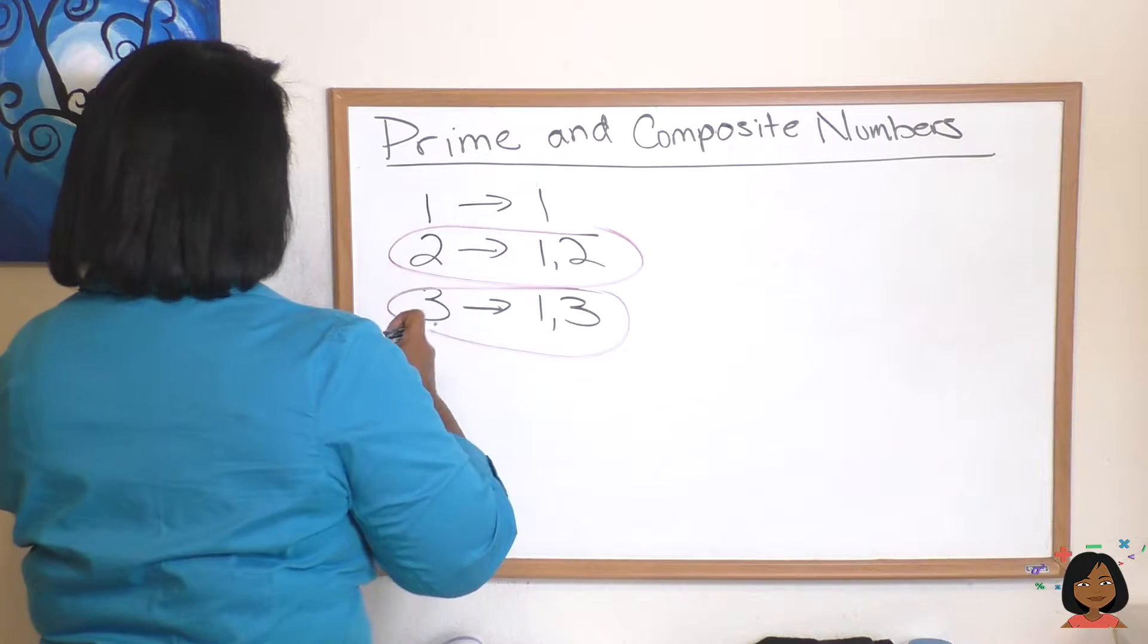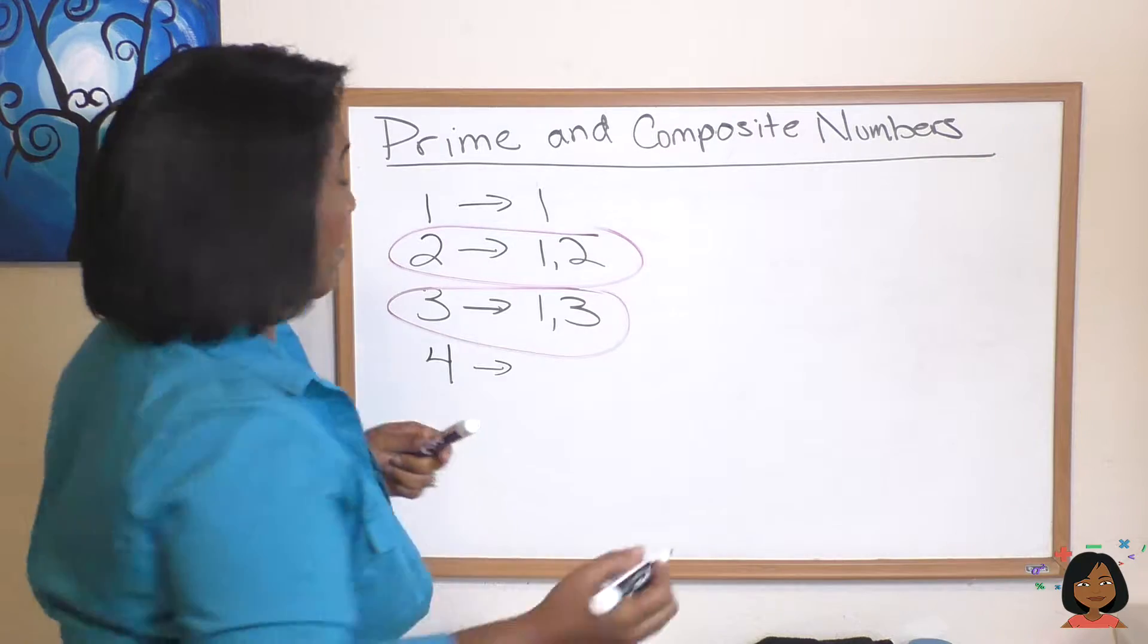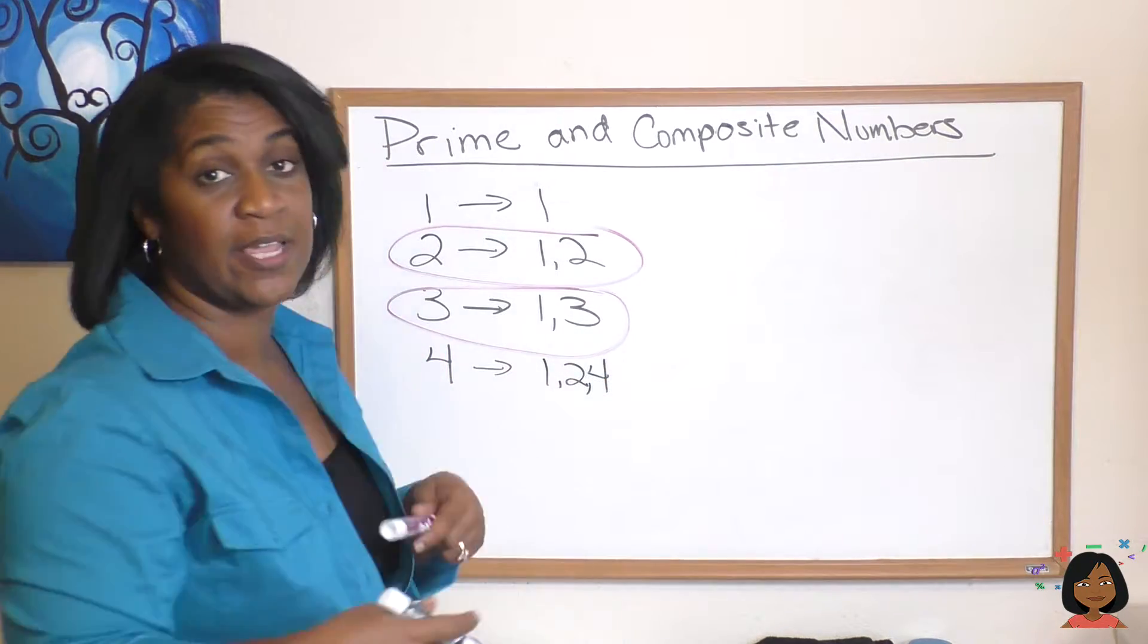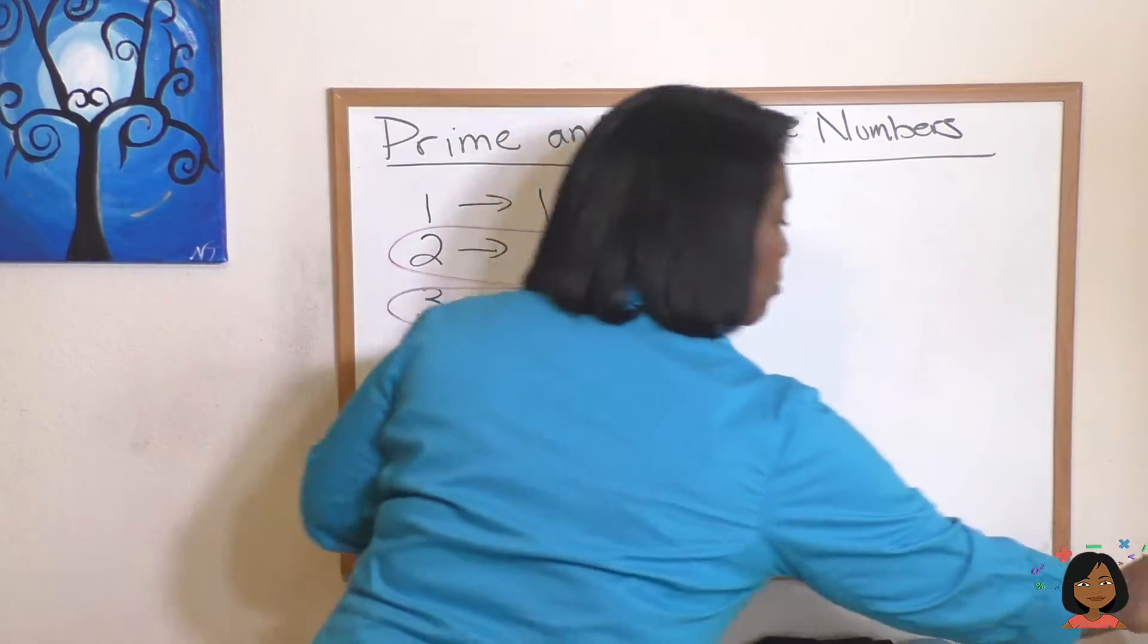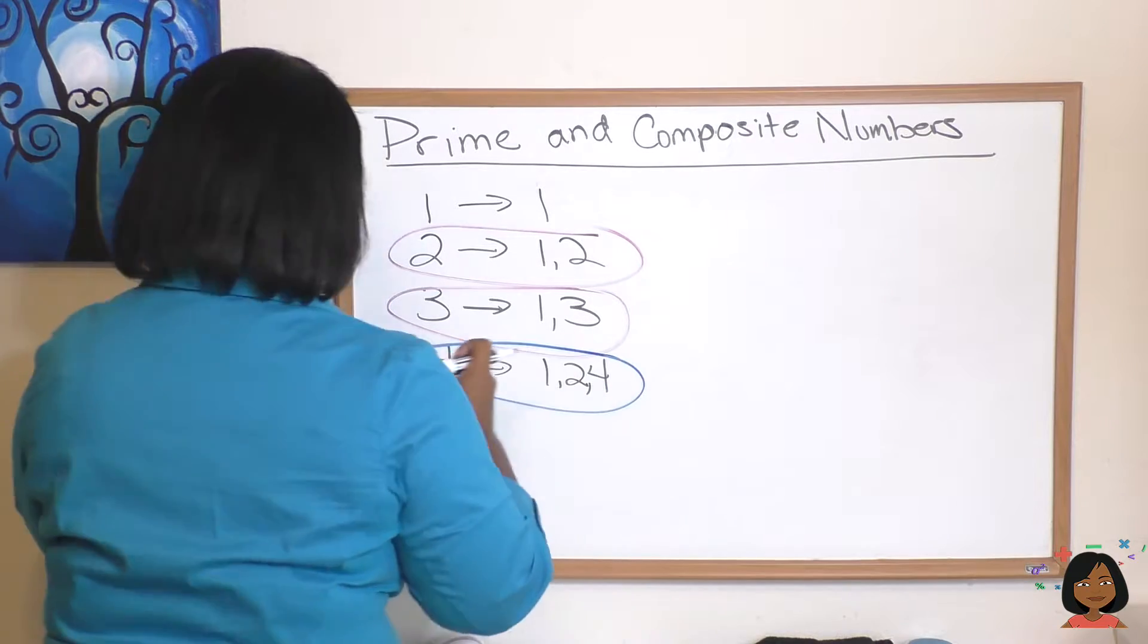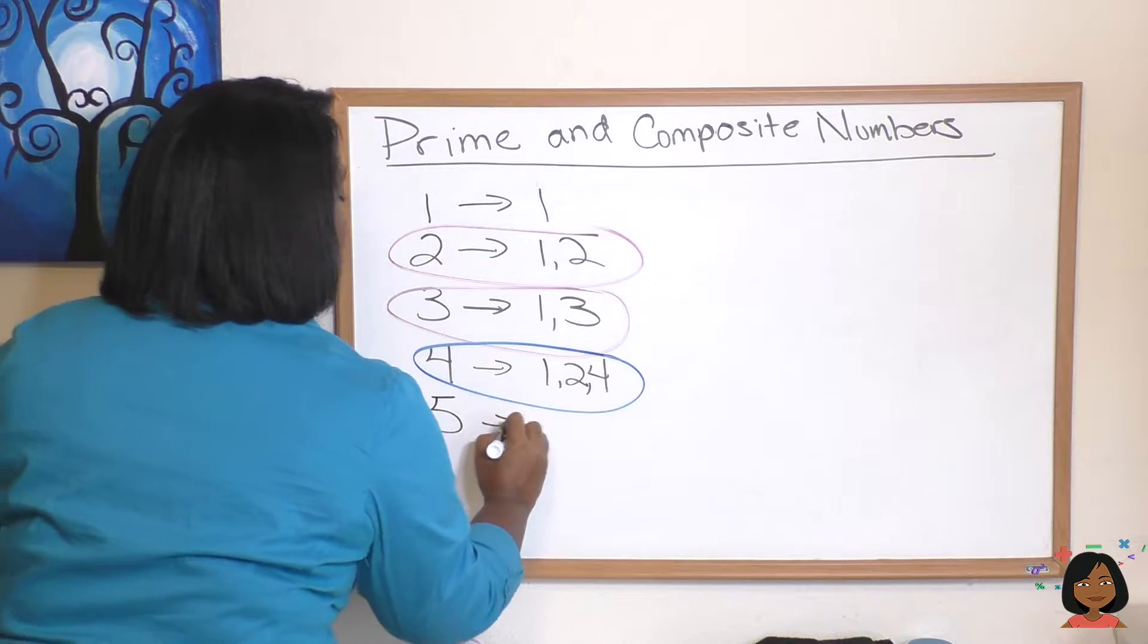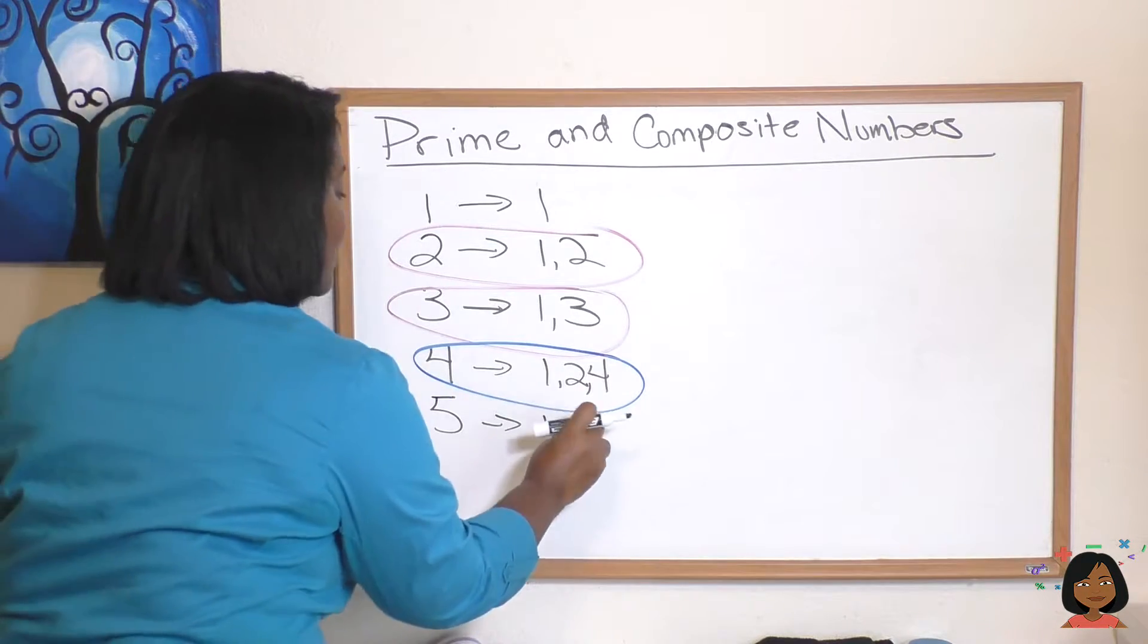What about four? The factors of four are one, two, and four. Well since it has at least three factors, that makes it composite. So I'm going with blue for that one, four is a composite number. And let's try five. Factors of five are one and five, which makes it prime. You've got the hang of this.